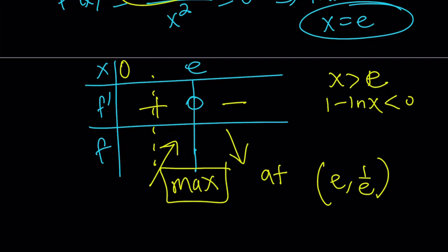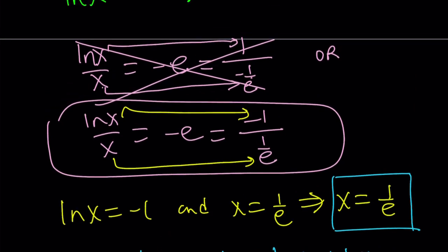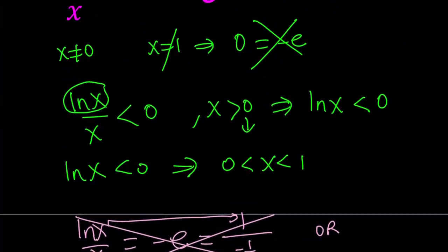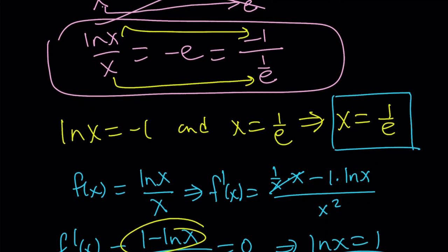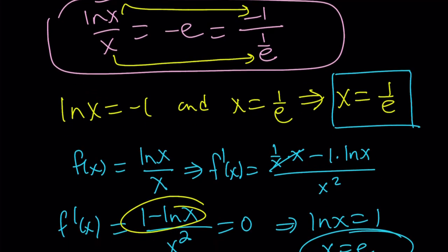And so let me just quickly summarize what I did here. So I kind of looked at the domain, and then I found out that x has to be between 0 and 1. And then I manipulate my expression, negative e. I wrote it as negative 1 divided by 1 over e, so that I can guess the x value.